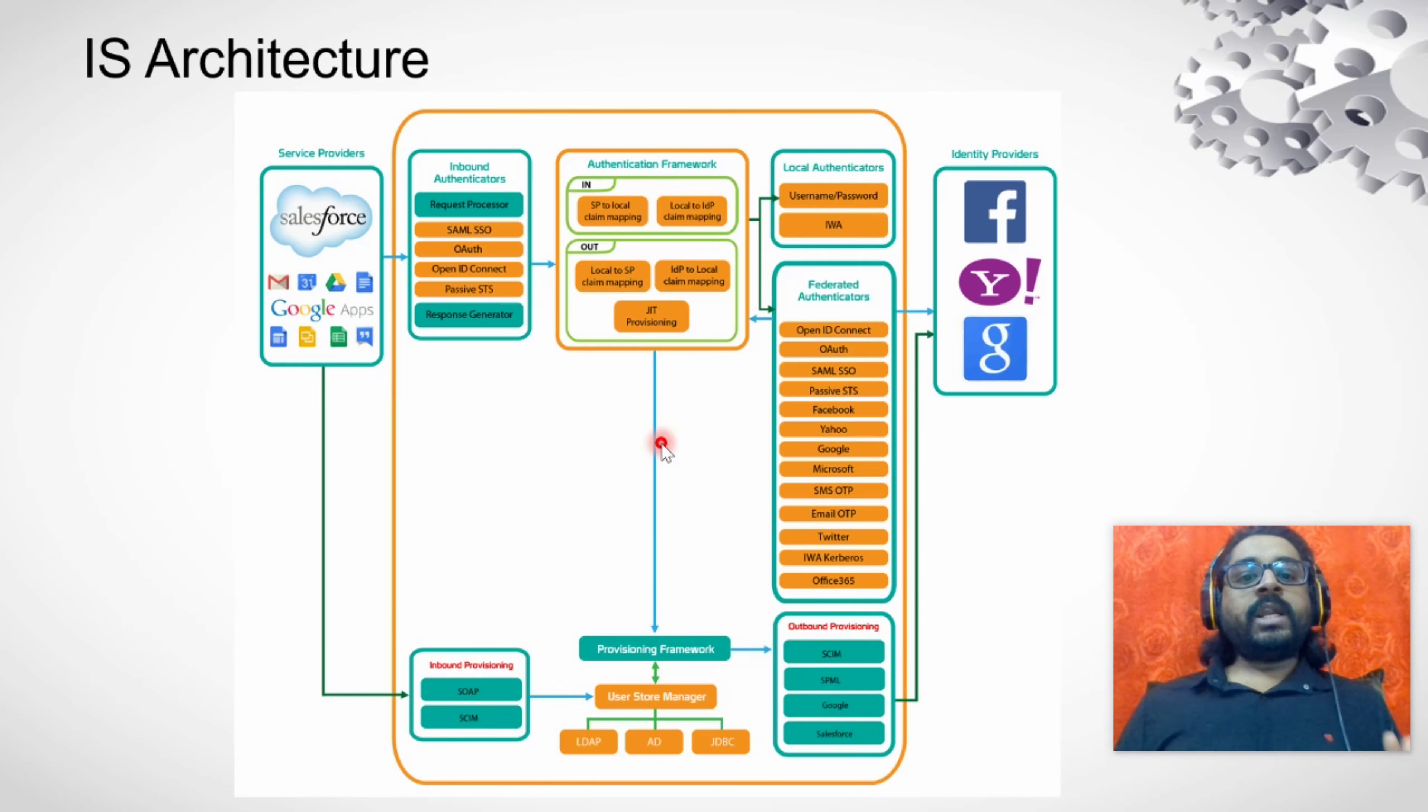So there are three types of provisioning: inbound provisioning, outbound provisioning, and just-in-time provisioning. Inbound provisioning is provisioning the user into the identity server. Outbound provisioning is to provision the user to the external application like Facebook, Google area.